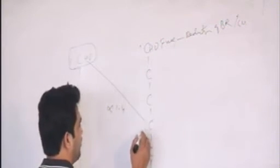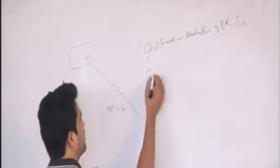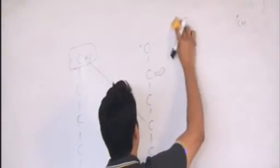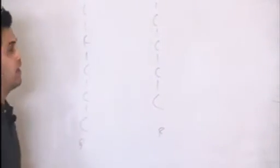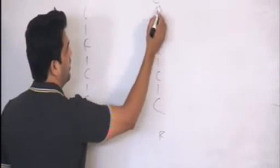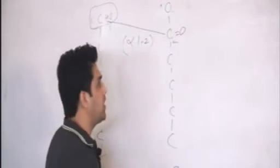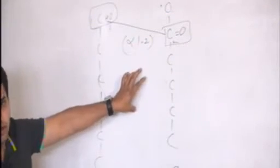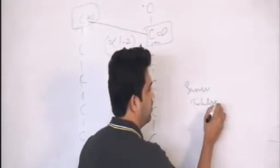Now let's talk about sucrose. In sucrose we have one glucose and one fructose. In fructose, the ketose is present on the second carbon. There is a bond formed between the first and second carbon — that is the alpha-1,2 bond. This functional group is busy and this functional group is also busy, so there is no free functional group to reduce the copper. That is why sucrose becomes a non-reducing sugar.